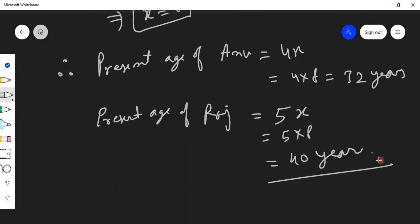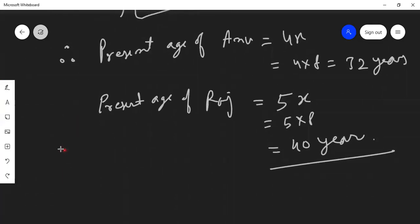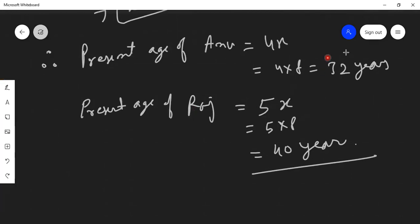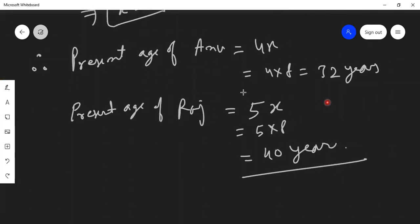Now what the question was saying, 8 years from now, now see, this person would become 32 plus 8. Let us quickly check it, 32 plus 8 should be 40. And this person will become, who is 40 years old, that is 48. Now if I see the ratio.